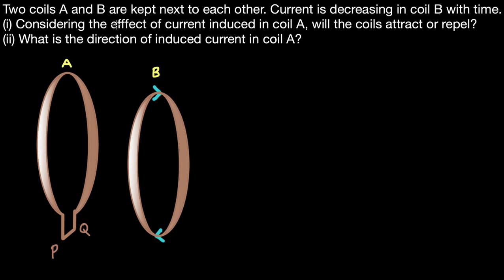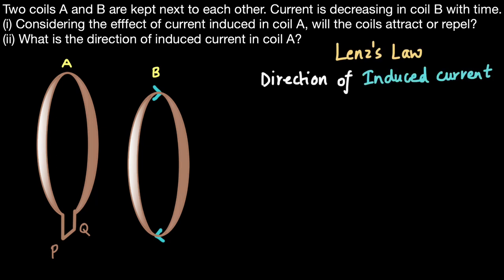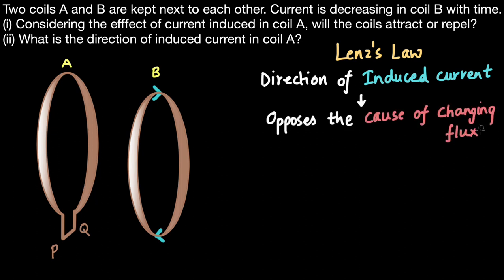Let's focus on the first part to begin with. For a common reference, the shiny part of the coil is towards us, which means node B will be towards us and Q is slightly further away. Because we are asked to consider the effect of some induced current, we can use Lenz's law, which states that the direction of induced current always opposes the cause of changing flux.